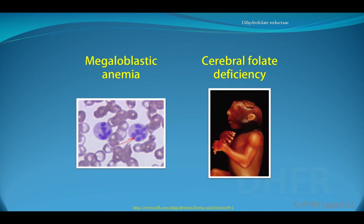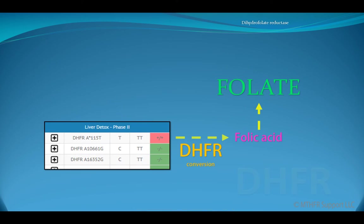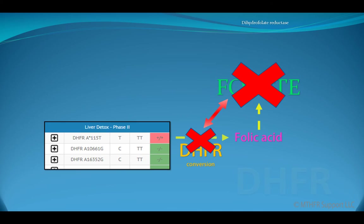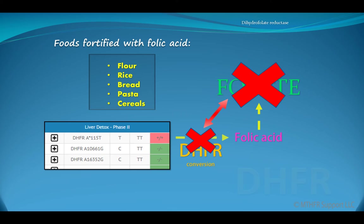The DHFR gene is related to megaloblastic anemia and cerebrofolate deficiency. Some people with compromised DHFR might have a hard time converting folic acid into the active bioavailable form of folate. Folic acid has been fortified into many processed foods such as flour, rice, bread, pasta, and cereals.